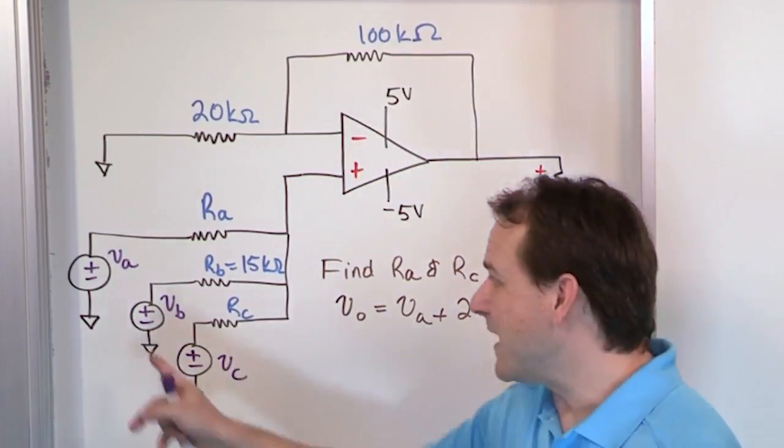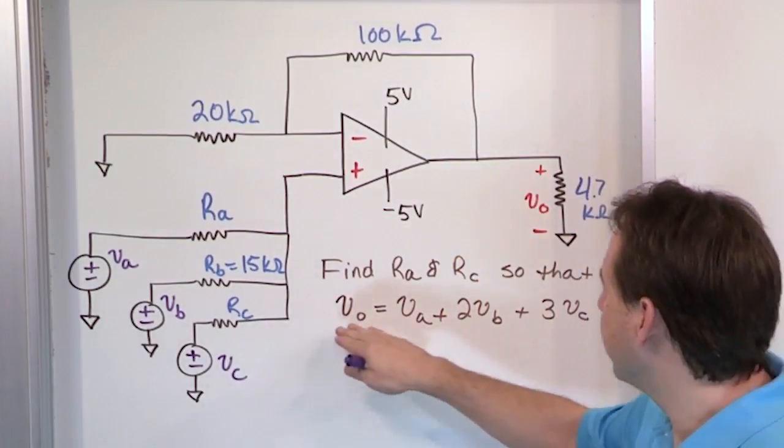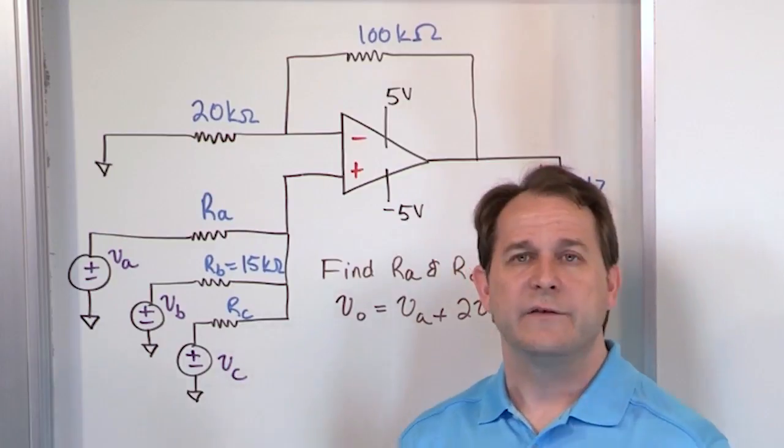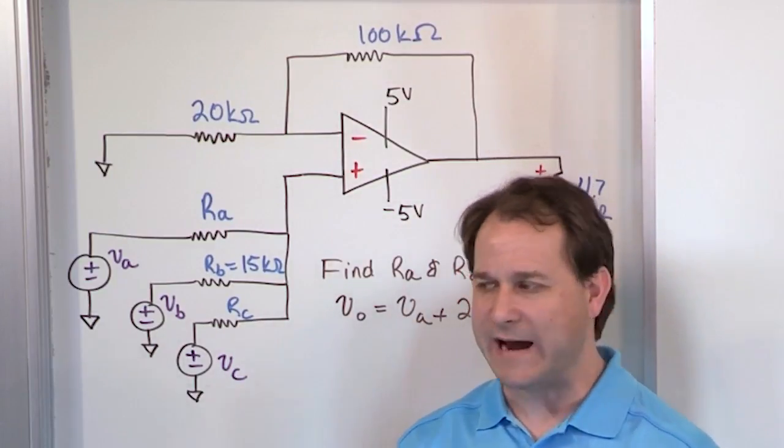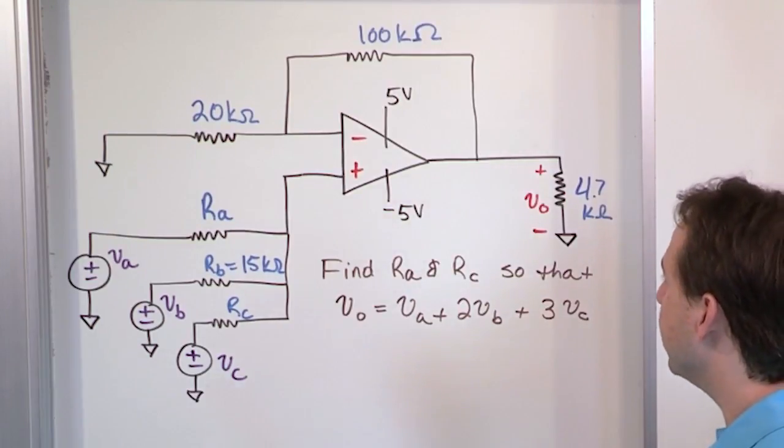Now the problem is that you're not given numbers for A, B, and C, and the output equation or the output of the amplifier, you're not given a number for any of it. So this is just an algebra problem. It's a nasty, nasty, nasty algebra problem.